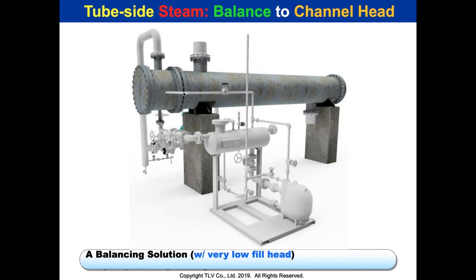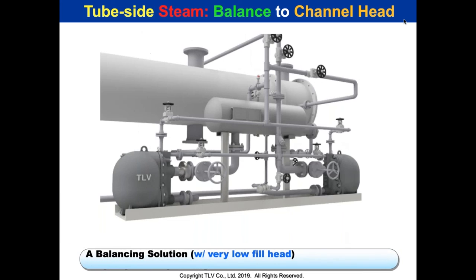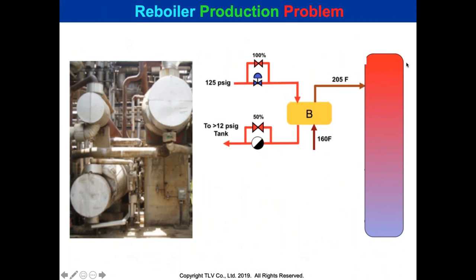That's the stringent balance-to-channel-head requirement. For a low-level reboiler close to grade, we put a loop keeping the line below the tube bundle, use center-fill with an oversized reservoir feeding three pumps — all feasible within narrow footprints.